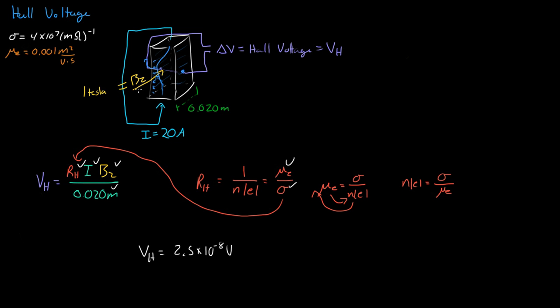So that's the Hall effect. The voltage overall is what you could expect — it is a very small voltage. But that's the general idea of how to calculate the Hall Voltage. Note that this calculation was done only for materials that allow electron flow, not hole flow.